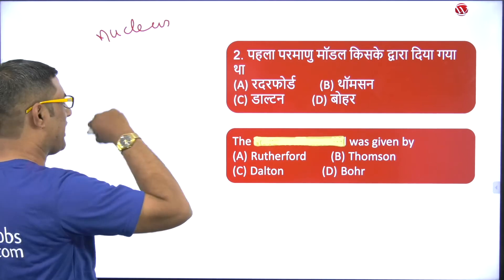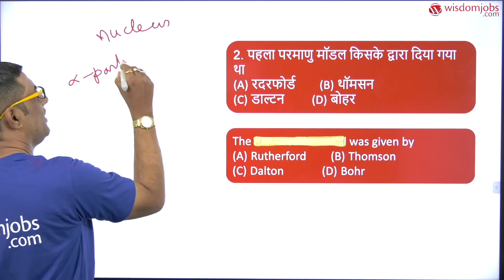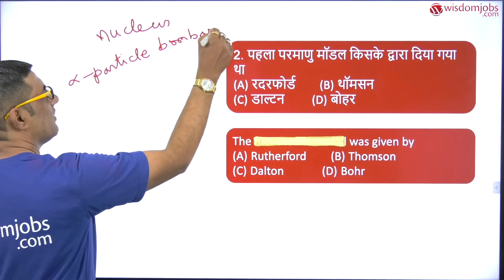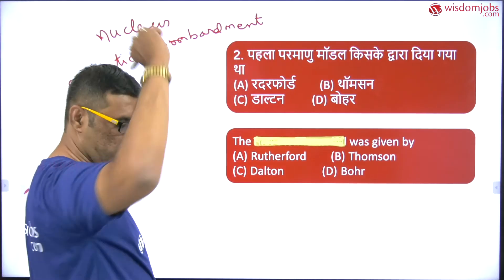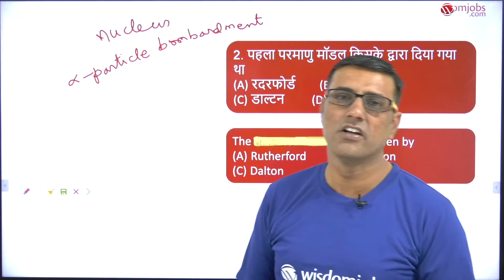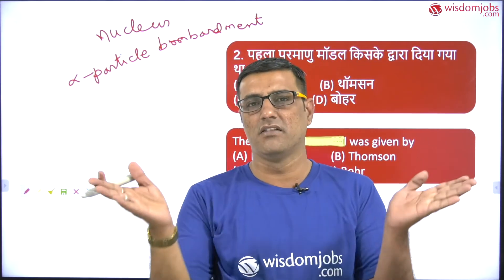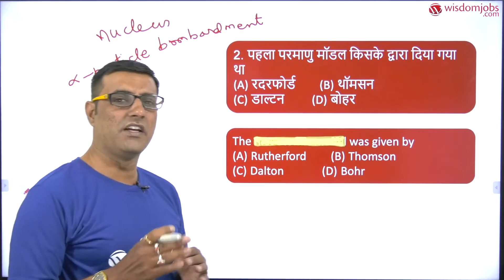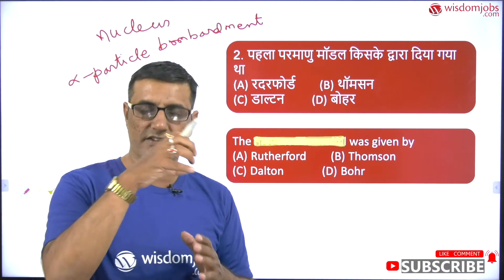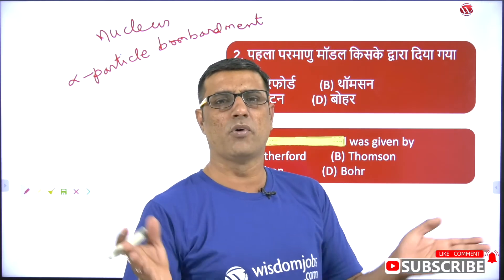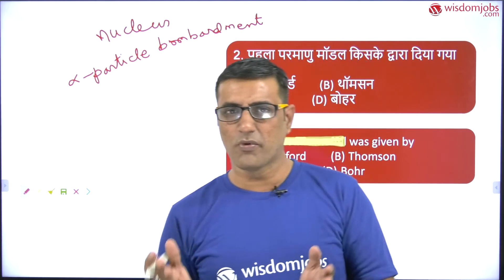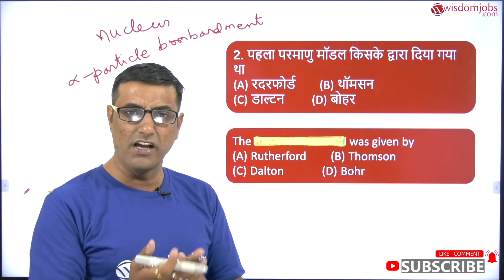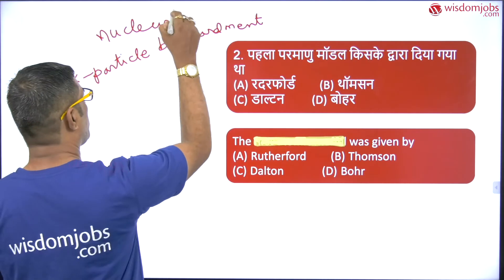With the help of alpha particle bombardment, Rutherford explored what is inside the atom. Alpha particles are positively charged particles, and they started deviating or repelling towards the anode. In any atom, if a positively charged particle is present inside, then only positively charged particles will be repelled. So he proposed that the center of the atom contains a positive charge, which he named the nucleus.